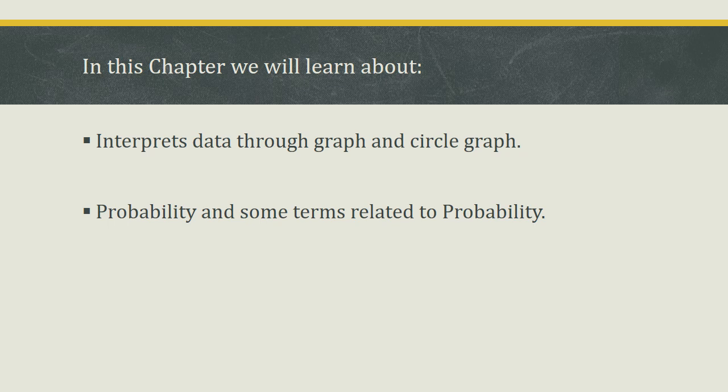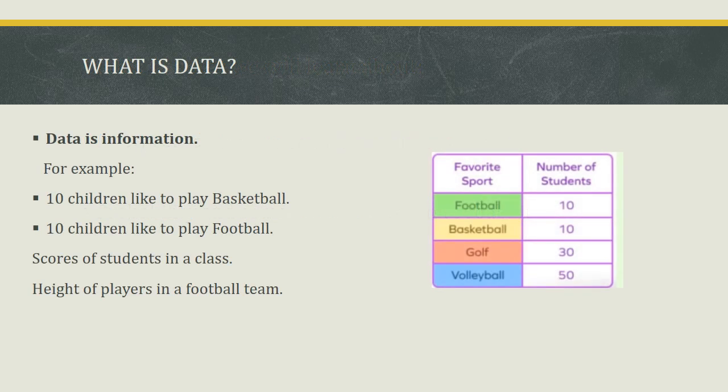In this chapter, we will learn about interpreting data through graphs and circle graphs, probability and some terms related to probability. Data is information. For example, 10 children like to play basketball, 10 children like to play football, scores of a student in a class, heights of players in a football team — all are examples of data.